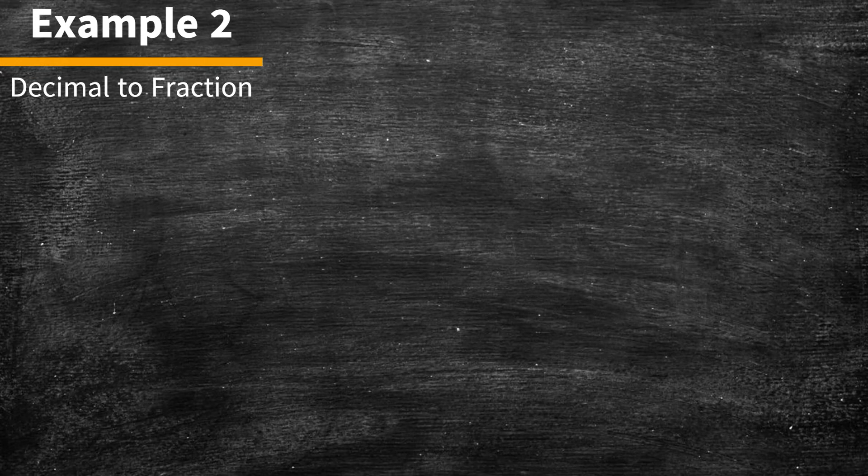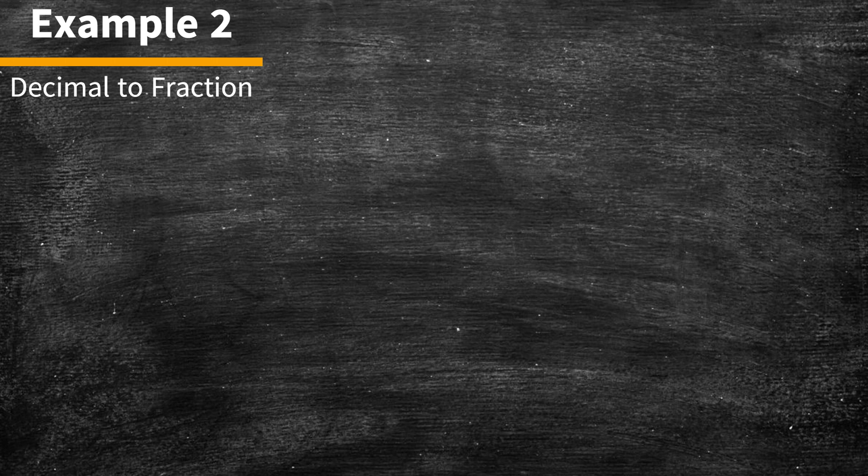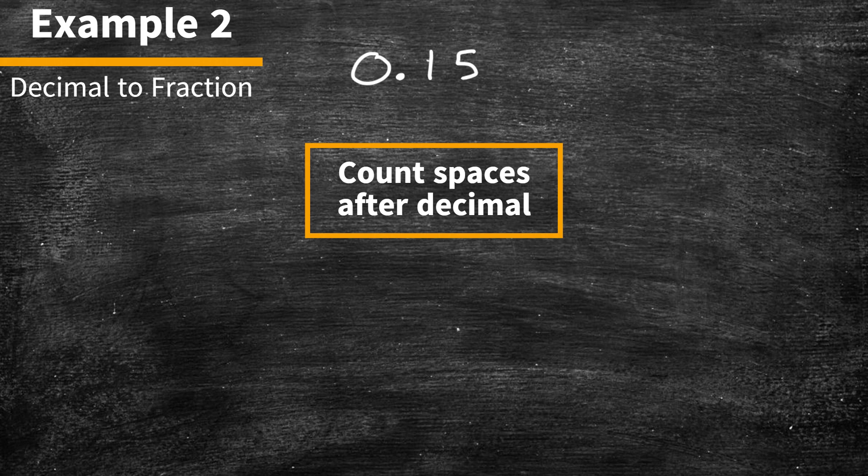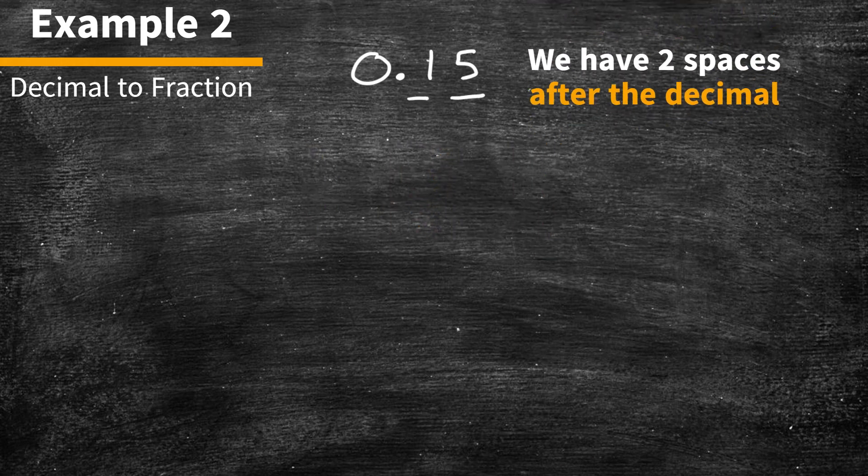Example number 2. Let's go from a decimal to a fraction. Let's try 0.15. What we do first is we count how many spaces after the decimal point there are. In this case, there are 2 spaces. From here, we'll take that number and write it as our numerator.